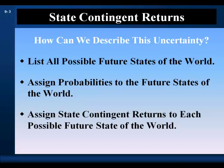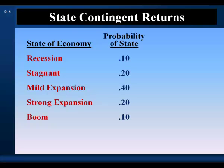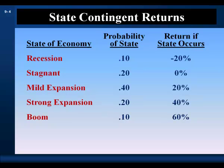Now let's describe some uncertainty. We have five possible future states of the world. The economy may go into recession, it may be stagnant, we may have a mild expansion, or we may have a strong expansion, and the economy may boom. We assess the probability of these future states of the world and assign state-contingent returns.